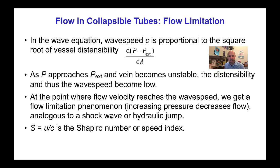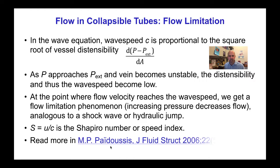In the same way that we have a Mach number for the ratio of speed to the speed of sound, for the wave speed of pulse wave propagation in veins, S equals U over C, where the flow velocity divided by the pulse wave propagation velocity is called the Shapiro number or speed index. This link is to an article that describes the history of the speed index and actually proposes that it be called the Shapiro number.